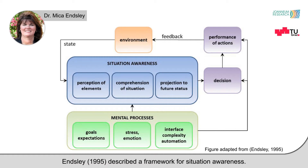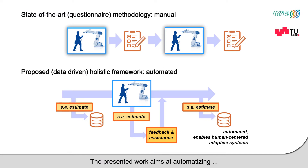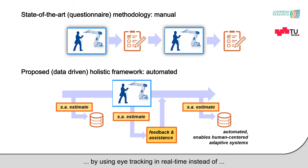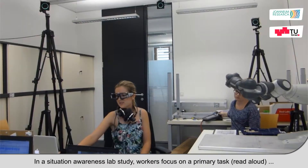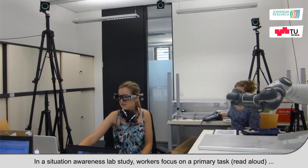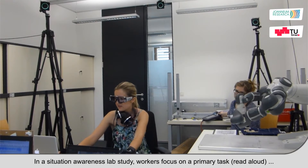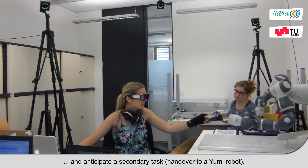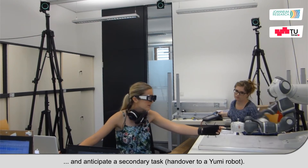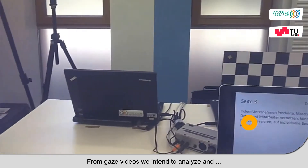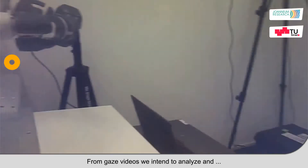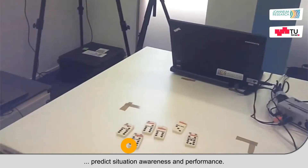Endsley described a framework for situation awareness. The presented work aims at automatizing the estimation of situation awareness by using eye tracking in real-time, instead of ex-post questionnaire analysis. In a situation awareness lab study, workers focus on a primary task and anticipate a secondary task. From gaze videos, we intend to analyze and predict situation awareness and performance.